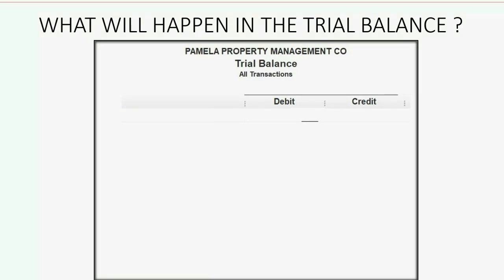Example 1: We have $3,000 in the bank now, so cash and bank will show up for the first time as $3,000. And rent payable to landlord clients is the reason we have that $3,000, because that $3,000 will have to be paid to the landlord clients. So it's money we owe — it's a liability with a credit balance — and $3,000 will show up on the credit side for the very first time. So let's follow the three-step plan and see if we get the same result.